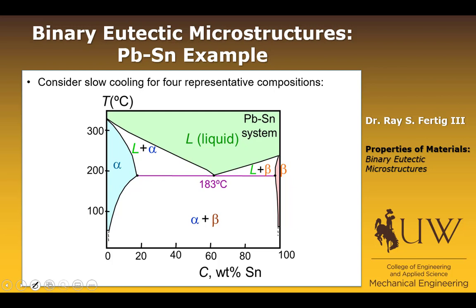The first case we're going to look at is where C0, the system composition, is less than 2 weight percent tin. In this case, that would mean we would still be in the alpha region down to at least room temperature or so. So we're going to look at that first.